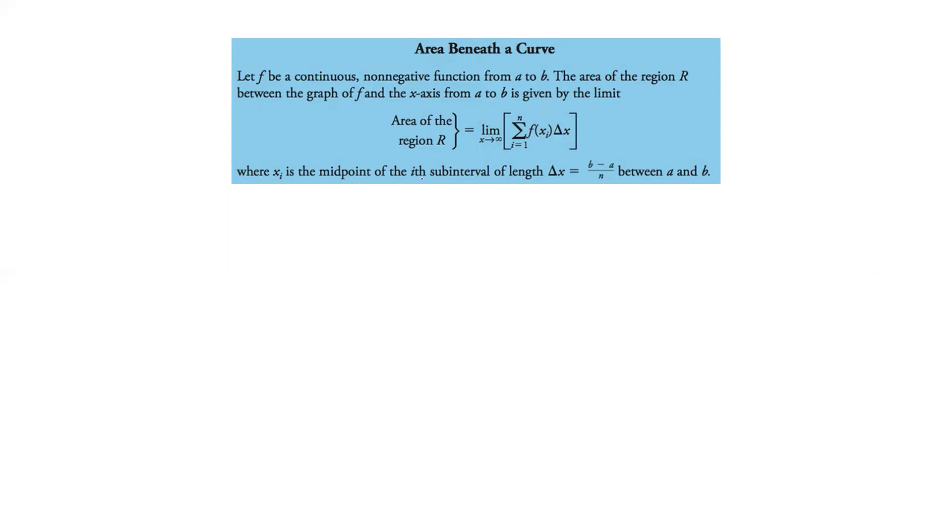And so, the xi, again, is the midpoint of the ith subinterval of length, again, b minus a divided by n. So wherever we have a's and b's between them.